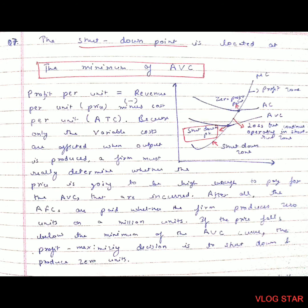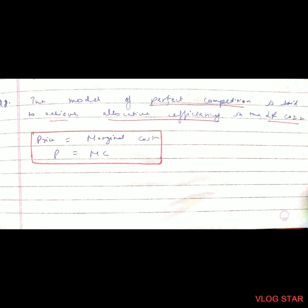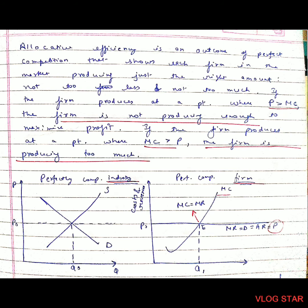Question 8: The model of perfect competition achieves allocative efficiency in the long run because price equals marginal cost. There cannot be any better allocation than when price equals marginal cost, meaning the firm charges only the price equal to its marginal cost. Allocative efficiency is an outcome of perfect competition where each firm produces just the right amount — not too little, not too much. If price is greater than MC, the firm is not producing enough to maximize profit.